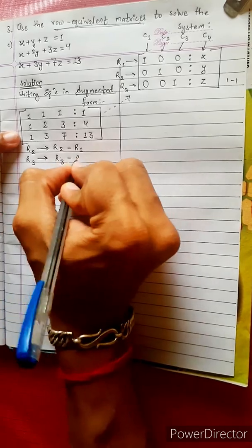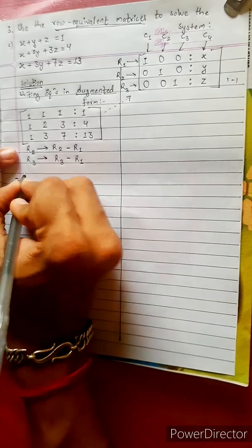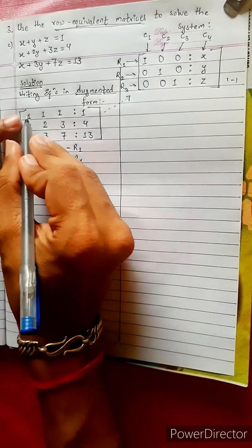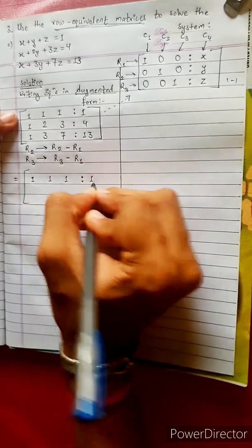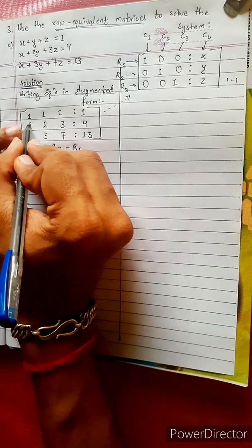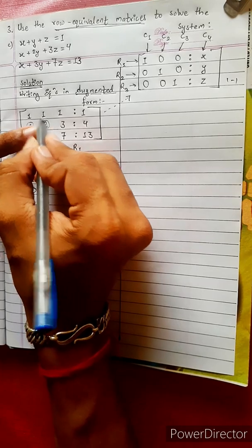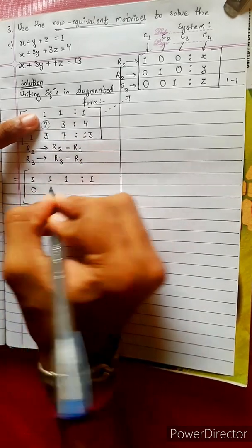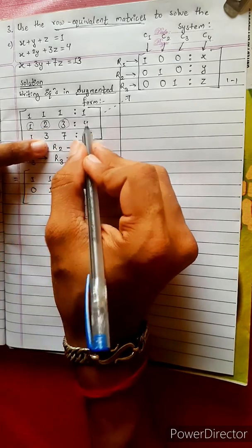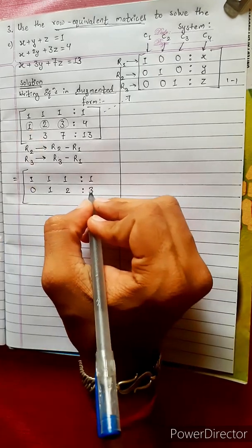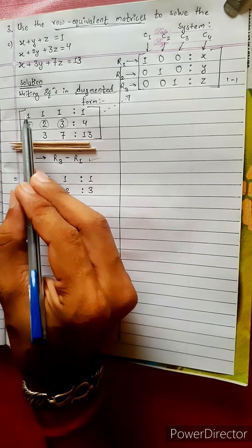3rd column. R1 remains as R1: 1, 1, 1 | 1. R2 becomes R2 minus R1: 0, 2-1, 2-1, 2-1 giving 0, 1, 2 | 4-1 = 3. R3 becomes R3 minus R1: 1-1 = 0.